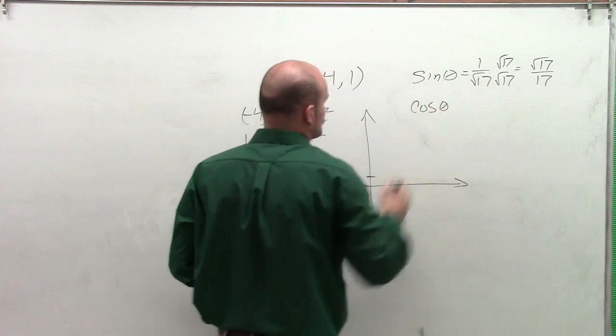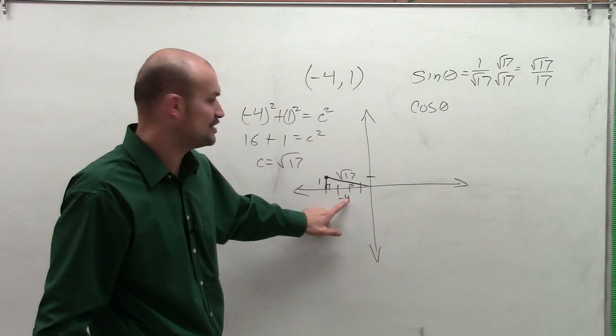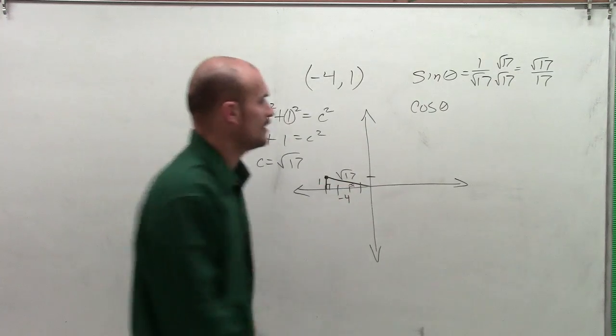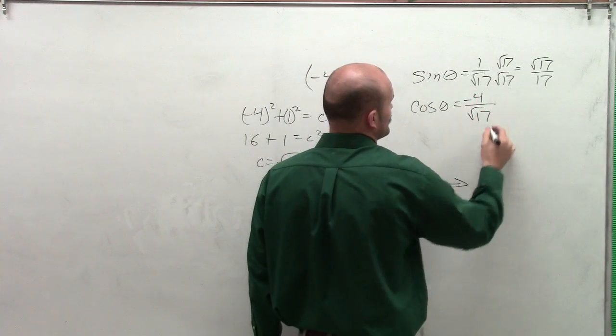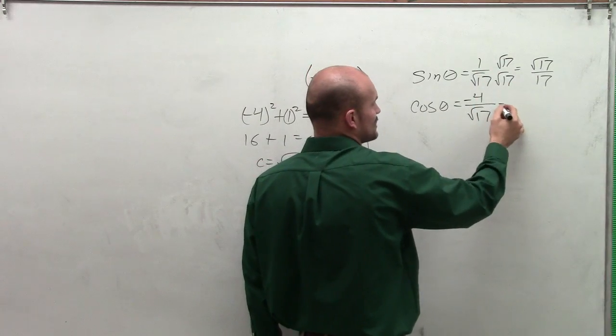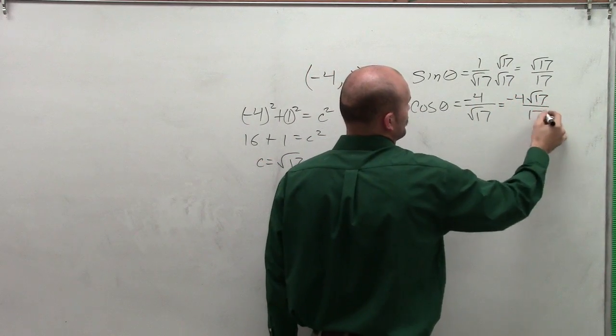Then I move on to the cosine of theta. The cosine of theta is the adjacent side of the angle over the hypotenuse. Therefore, I have -4 divided by the square root of 17. Simplify by rationalizing the same way, and you'll have -4√17 over 17.